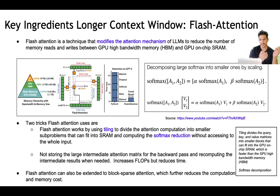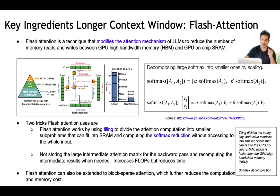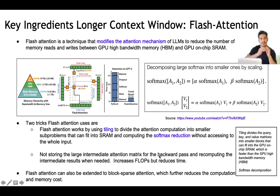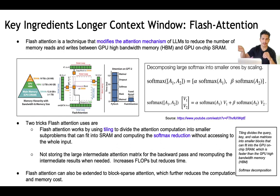The second trick in flash attention is about the backward pass. In standard attention, large intermediate attention matrices are stored for use in the backward pass. In flash attention, instead of storing these matrices, we recompute them using tiling during the backward pass. It's found that although this recomputation increases floating point operations (FLOPs), the overall time reduces because we avoid back-and-forth reading between HBM and SRAM. Flash attention can also be extended to sparse attention to further reduce computation and memory cost.